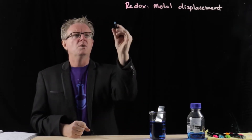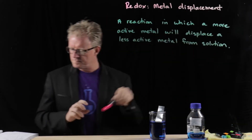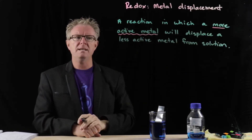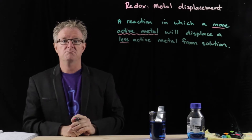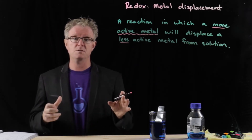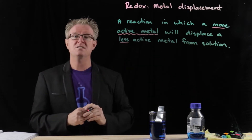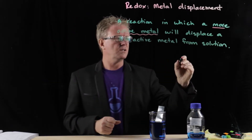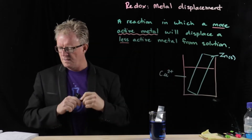So what is a metal displacement reaction? A reaction in which a more active metal will displace a less active metal from solution. Displacement means to change positions — you've probably heard people say people are displaced from their homeland. In physics, displacement is the distance between your initial starting point and your finishing point. Here we're talking about a position change of elements. So let's draw a diagrammatical representation of what's going on in this beaker.